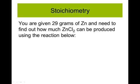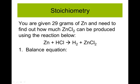Let's work an example problem. We're given 29 grams of zinc and want to figure out how much zinc chloride could be produced. Here's the unbalanced reaction: it's unbalanced because there are two hydrogens and two chlorines on one side but only one on the other. So the first step is to balance it. Putting a two in front gives two hydrogens and two chlorines to match, and there's one zinc on each side, so the equation is balanced.